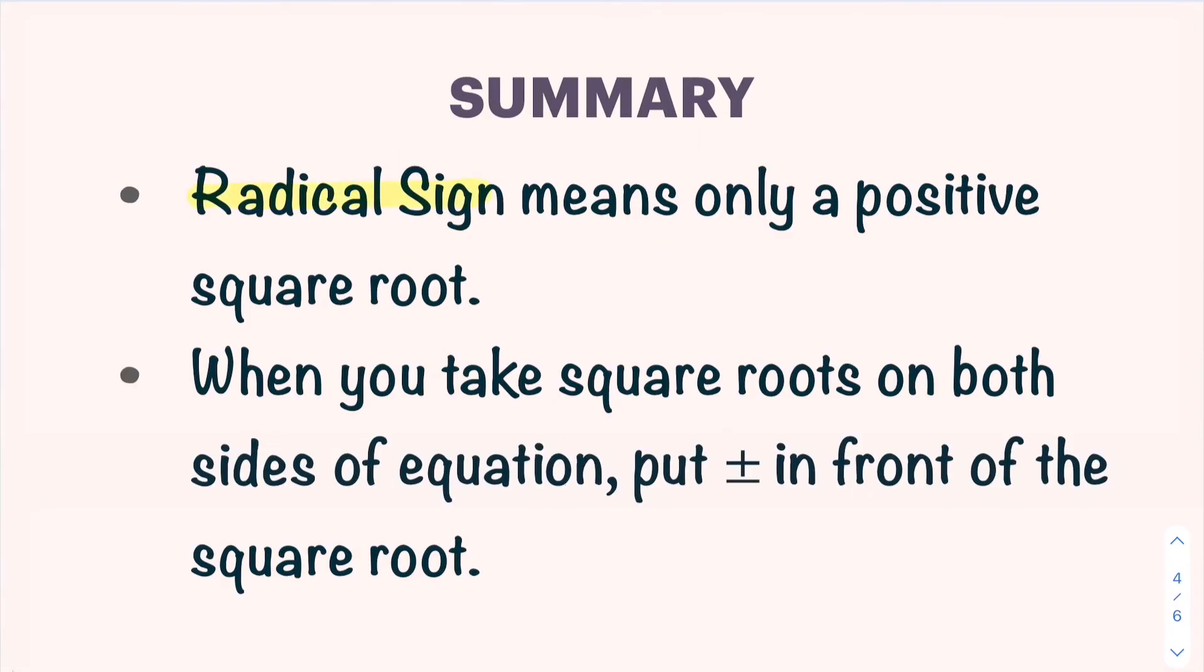Let me summarize: radical sign means only a positive square root. But when you're taking square roots on both sides of the equation, make sure to put plus and minus in front of the square root. So when you have an equation like this and when you're solving it, you take square root on both sides and make sure you write plus and minus in front of the square root on the right side of the equation.